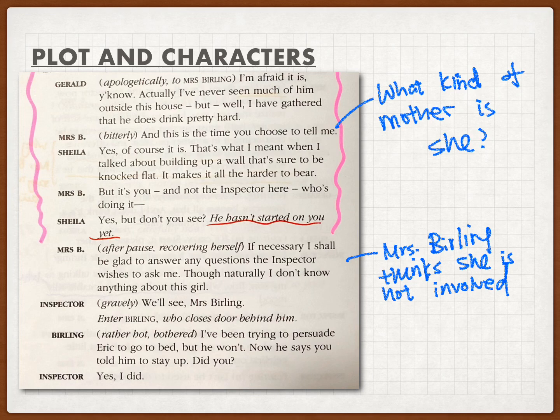Power, money, and social status meant more to Mrs. Birling than her own family — the time she spent with other upper-class ladies was probably more than with her own children. Back to the conversation: Mrs. Birling was annoyed and asked Sheila to stop, saying it was just Sheila being silly. Sheila disagreed, pointing out it was only because the inspector hadn't questioned Mrs. Birling yet. But Mrs. Birling remained very confident, saying she had nothing to hide and had done nothing wrong.